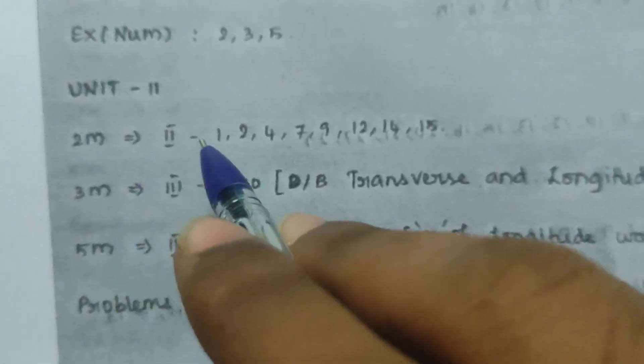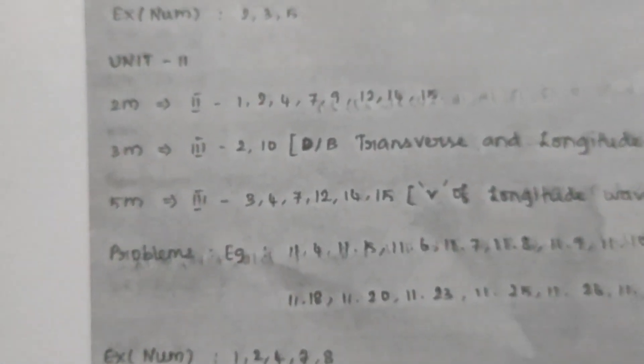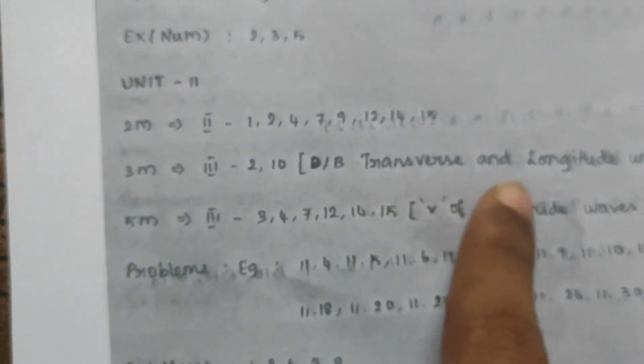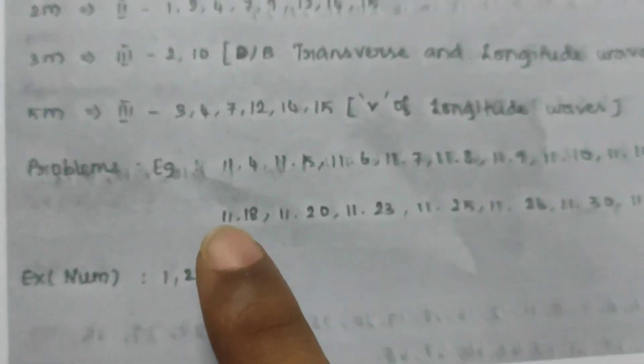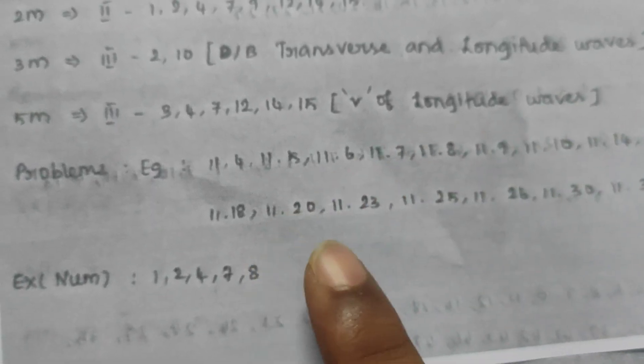Unit 11: 2-mark questions — 12, 7, 9, 12, 14, 15. If you study these, you can score well — you can reach 70. There is a small portion you can cover in one or two days. 3-mark: 2, 10; difference between transverse and longitude waves. 5-mark: 5, 4, 7, 12, 50, longitude. Problems: 11.4, 11.5, 11.6, 11.7, 11.9, 11.10, 11.14, 11.15, 11.18, 11.20, 11.23, 11.25, 11.26, 11.30, 11.31.